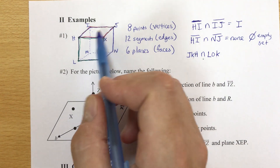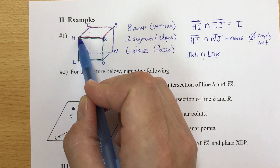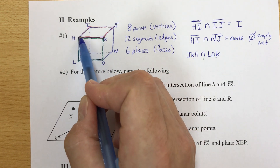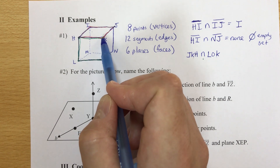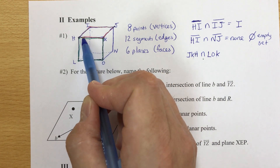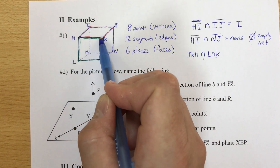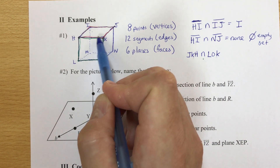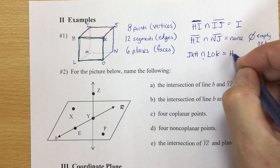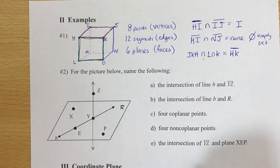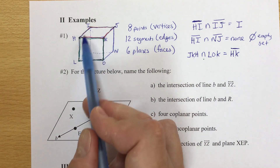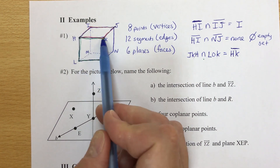Tracing both planes, the only part that has both colors is from H to K. They both share point H, point K, and all the points on that segment. We can't list infinitely many points, so we write segment HK with a segment bar — meaning all points in between. The intersection of the top and the front is segment HK.